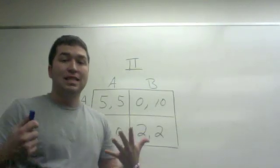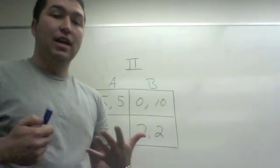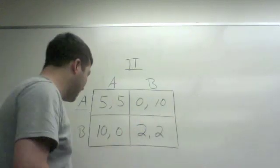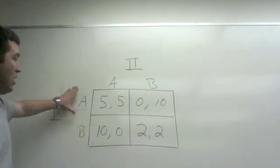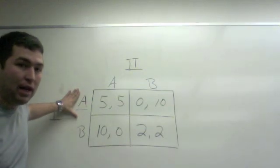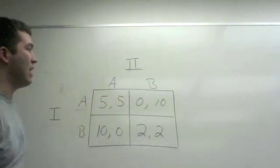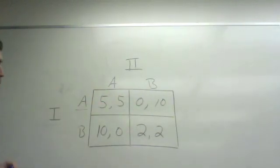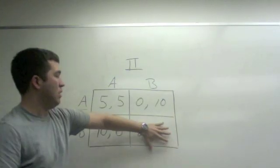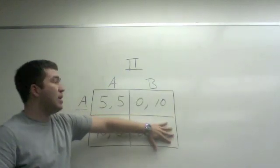What we're going to do is set player one's strategy at A. We're going to fix it to A. So player one is going to be playing A. We're only going to be looking at this row right here. If player one is going to play A, let's just block out them playing B.